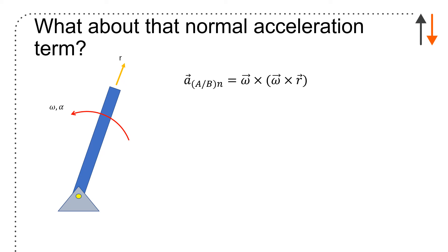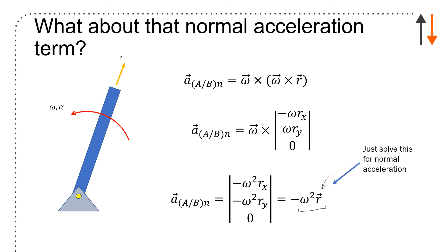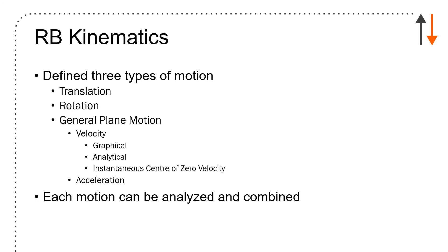What about that normal acceleration term? The acceleration of A with respect to B normal is omega cross omega cross r. I can rewrite that and solve for the normal acceleration, which is always in the radial direction. That's what's interesting - r is defined outward, and the reason why you have that negative is because normal acceleration points in towards the center of rotation. Here I have an arm that's rotating at omega and alpha in a counterclockwise way, but there is the direction that I expect to have for the normal acceleration.